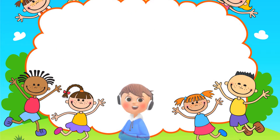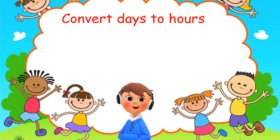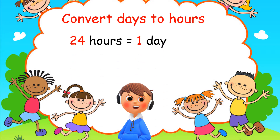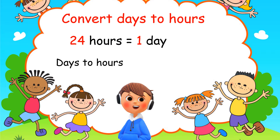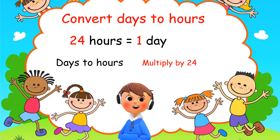First, let's learn how to convert days to hours. We know that 24 hours makes one day — there are 24 hours in one day. So if we want to convert days to hours, we simply multiply by 24, since there are 24 hours in one day.